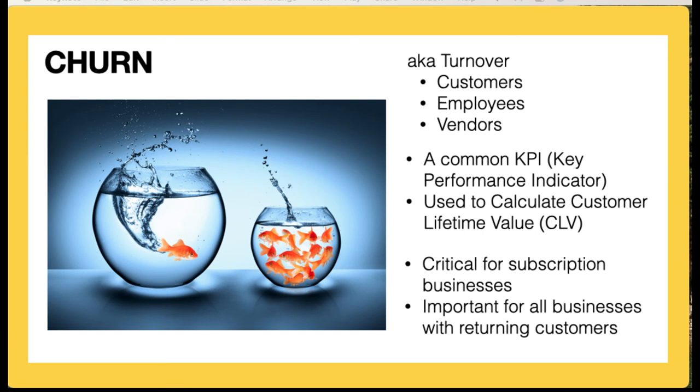Churn is used to calculate customer lifetime value, which is very important because it tells us the value in dollars that we get from that customer over their lifetime — over the entire time they spend with us. That's very important because we might decide how much we're willing to spend to acquire a customer based on how much we're going to get out of that customer.